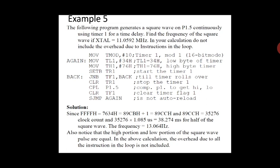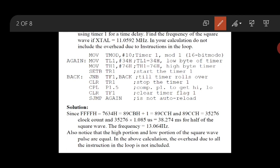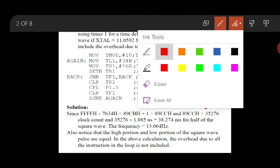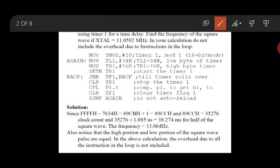Since we are using Timer 1, we configure the higher nibble of the TMOD register. The higher nibble is 4 bits. For Mode 1, the lower 2 bits indicate the mode — the next bits are C/T and GATE. We are using the internal clock, so C/T = 0. GATE = 0 because it will be software controlled. The TMOD value is 0001 0000, i.e., 10H for Timer 1 in Mode 1.